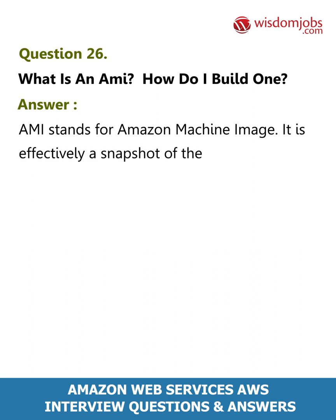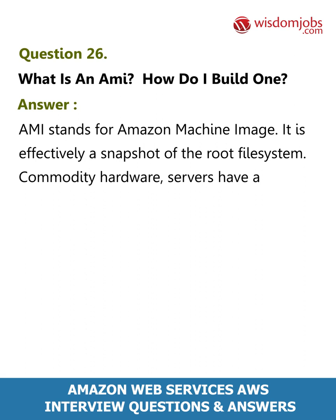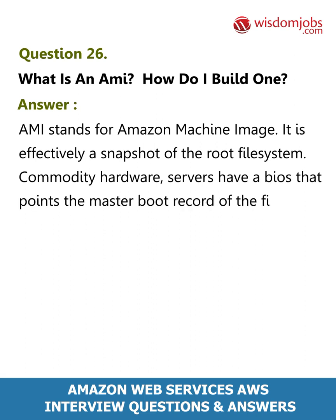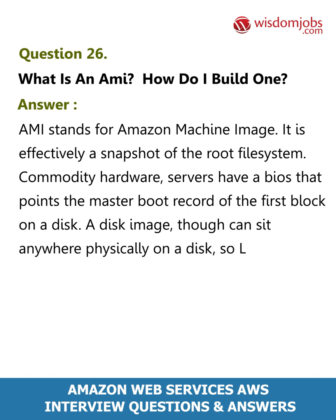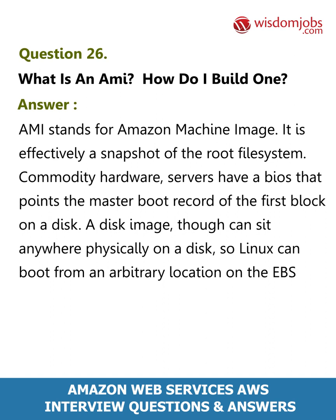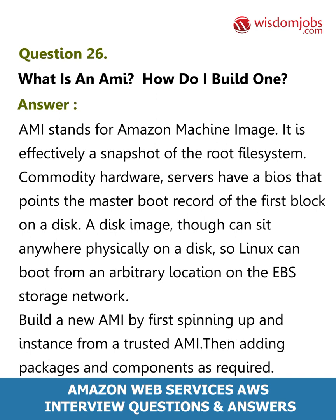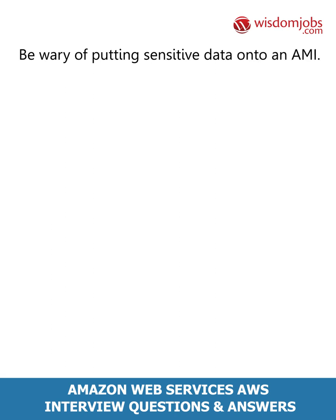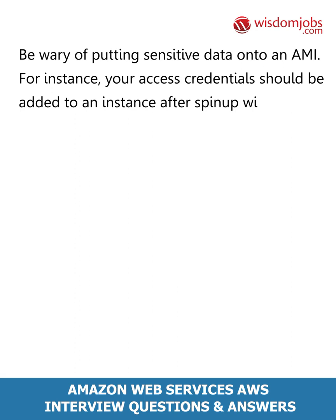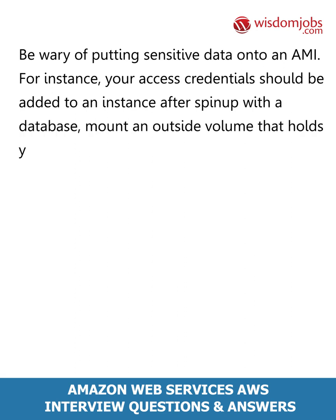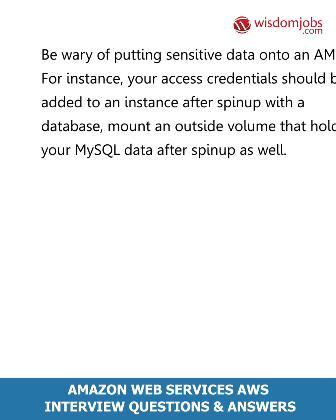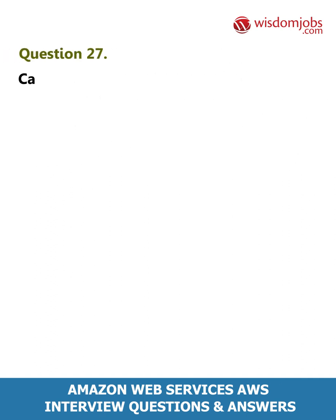Question 26: What is an AMI and how do I build one? Answer: AMI stands for Amazon Machine Image — it is effectively a snapshot of the root file system. Commodity hardware servers have a BIOS that points to the master boot record of the first block on a disk; a disk image can sit anywhere physically on a disk, so Linux can boot from an arbitrary location on the EBS storage network. Build a new AMI by first spinning up an instance from a trusted AMI, then adding packages and components as required. Be wary of putting sensitive data onto an AMI — access credentials should be added to an instance after spin-up, and mount an outside volume holding your MySQL data after spin-up as well.